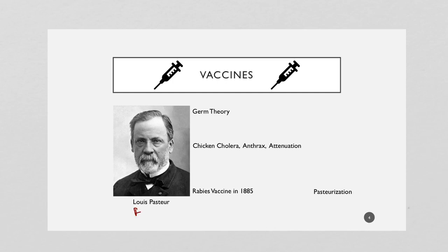The next step in the history of vaccination comes from Louis Pasteur. He is from France, and he is the quote-unquote father of germ theory. Dr. Jenner had this idea that being exposed to something not as bad as smallpox would give you immunity because something inside you recognized it as the same as smallpox. But it wasn't until Pasteur came up with his germ theory that we understood it was these germs — these microbes — that actually cause disease.